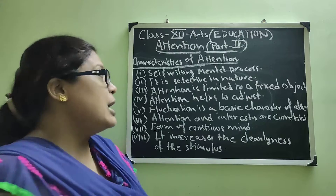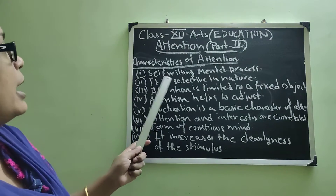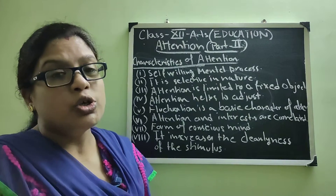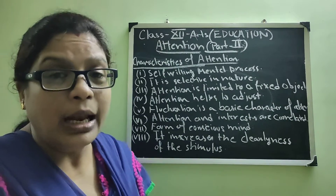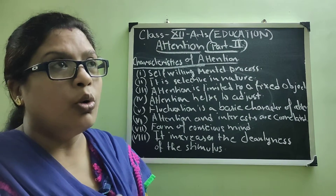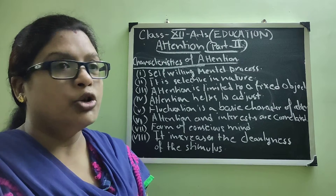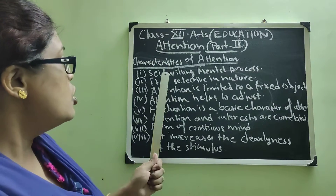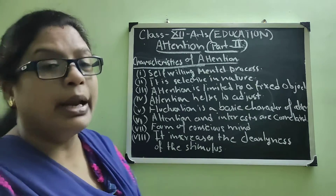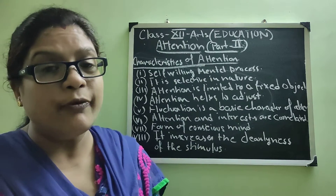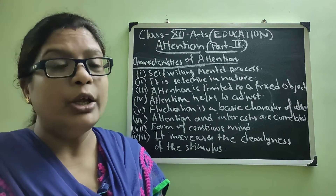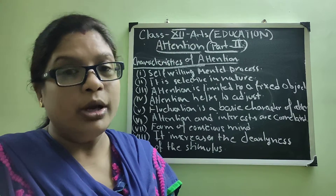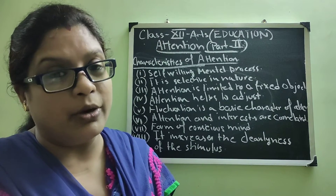Number 1: Attention is a self-willing mental process. What is the meaning of will? Will means your own choice — when you are choosing, it is your wish. Attention is a self-willing mental process. When you are willing to pay attention on a particular topic, your mind and your work align.